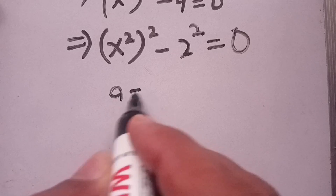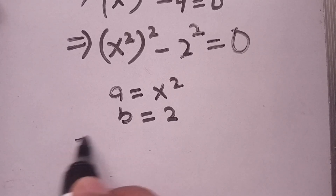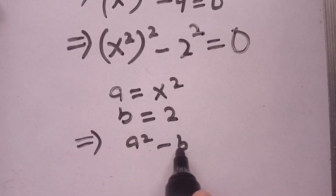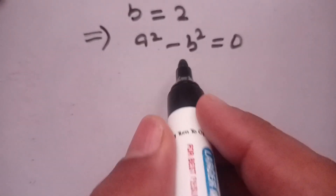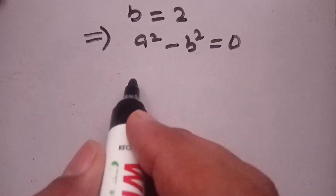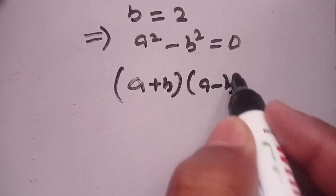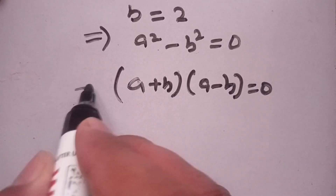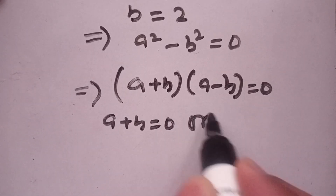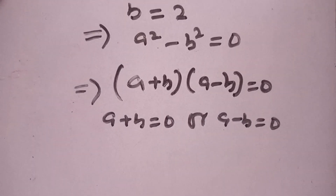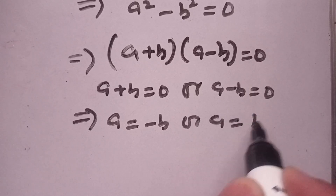Now consider a is equal to x squared and b is equal to 2. It becomes a squared minus b squared equals 0. From the identity: a squared minus b squared equals a plus b times a minus b equals 0. Equating both factors to 0, we get a plus b equals 0 or a minus b equals 0, which implies a equals minus b or a equals b.